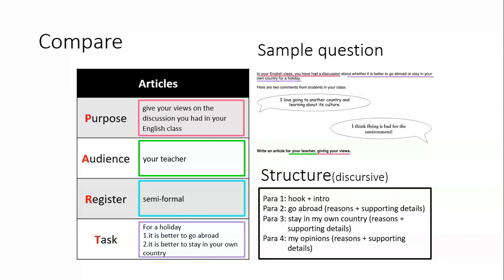So the article structure will look like this: a hook and an introduction, paragraph two with reasons to go abroad, paragraph three with reasons to stay in your own country, and paragraph four as a conclusion where you give your own opinion — your final decision.